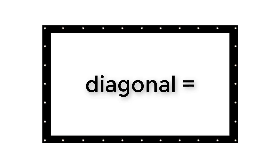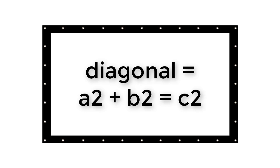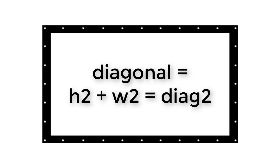To get the diagonal screen size, use the Pythagorean theorem that you learned back in high school. In case you weren't paying attention in class, that formula is a squared plus b squared equals c squared, where a is the height of the screen and b is the width of the screen.